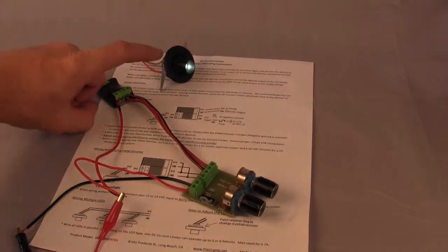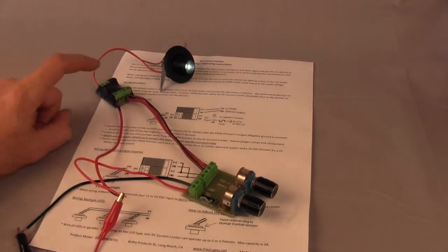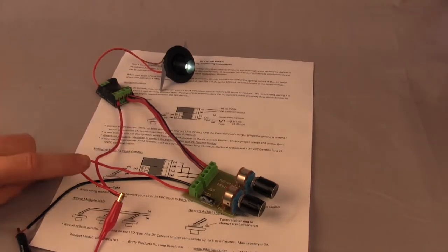This short video shows you how to connect a small low voltage downlight to a current limiter and a dimmer and power source.